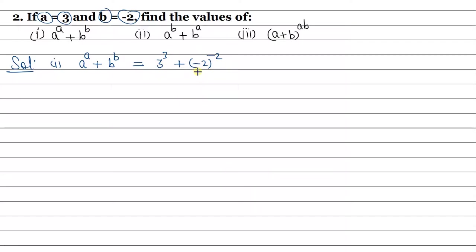Now we have to evaluate our value. 3 to the power 3, and for minus 2 to the power minus 2, since the exponent is negative, we reciprocal it to get positive — that is, 1 upon minus 2 to the power plus 2.